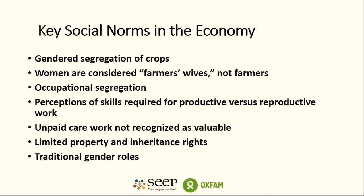To give a general sense of the key social norms in the economy that the Practitioner Learning Group identified: first, gendered segregation — farming is considered a man's job; women are considered farmer's wives, not farmers. Another is gendered occupational segregation including men's crops versus women's crops — men do the bookkeeping and women are secretaries. Norms regarding management and control over income from cash crops like cocoa: these are considered men's crops.